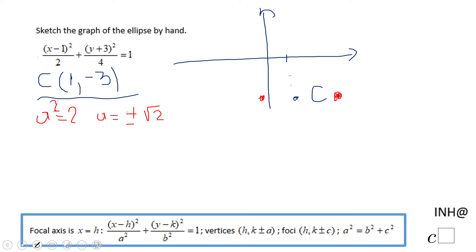And let's do the same for b squared. b squared is 4, so b will be plus and minus 2. So that means from this C I'm going to move 2 units up, and that's easy to do. From 1 and negative 3, if I move 2 units up I'm going to have 1 and negative 1, and 2 units down.